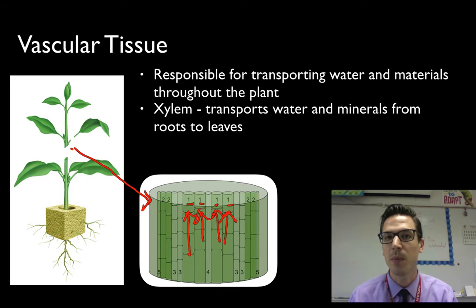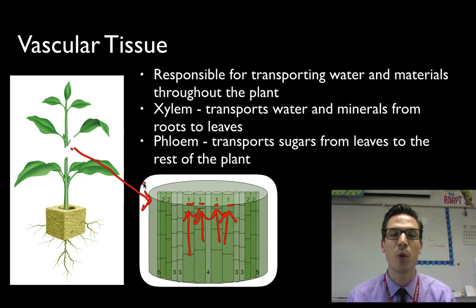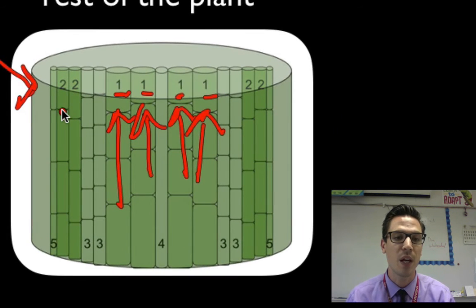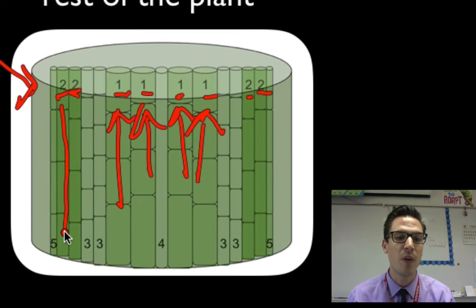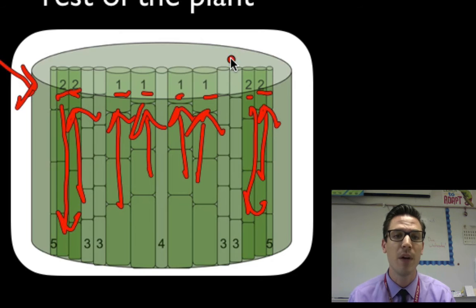What about the other things the plant needs to transport, like the sugars made from photosynthesis? That can't go through xylem — it takes another type of vascular tissue known as phloem. Phloem transports sugars made from photosynthesis from the leaves where they're made throughout the plant, moving both up and down. So phloem gets bilateral movement. To compare: xylem transports water in one direction — up. Phloem transports food — sugars from photosynthesis — and can move in both up and down directions.